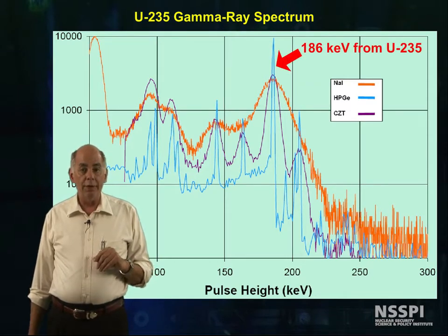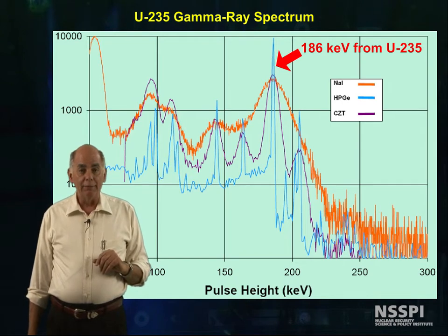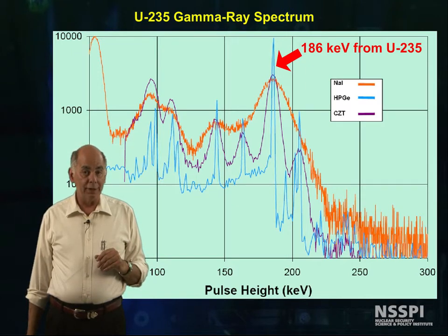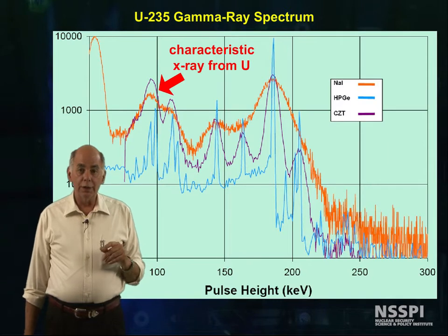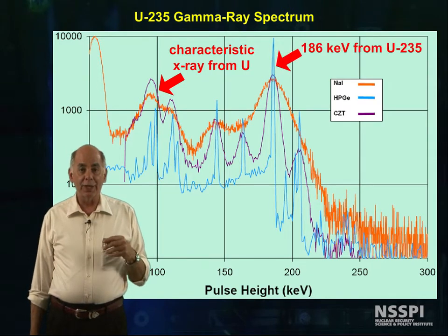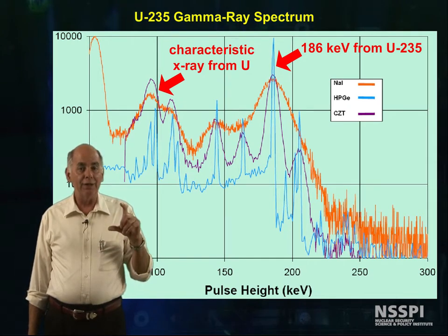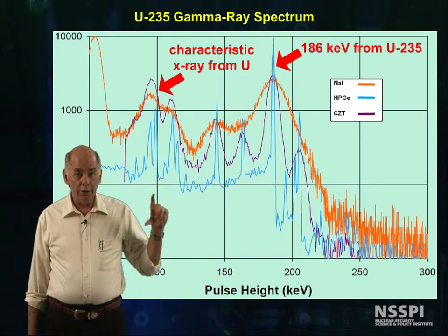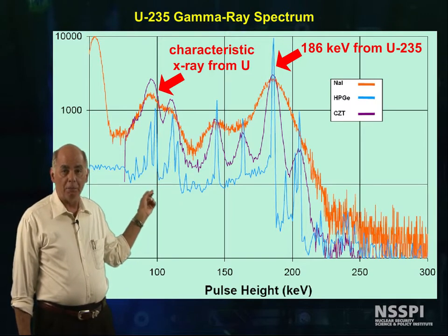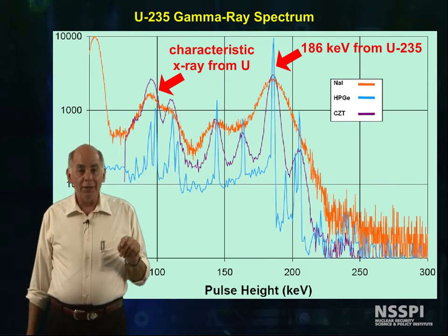A very important feature is the 186 keV peak from U-235. It is this peak that we use as a quantitative measure of the U-235 in the sample. Also notice the uranium characteristic x-rays at around 100 keV. We can hypothesize that the sample measured here is HEU, based on the height of the 186 keV peak relative to the uranium x-rays.